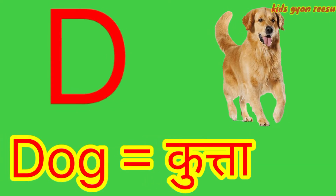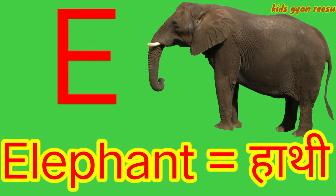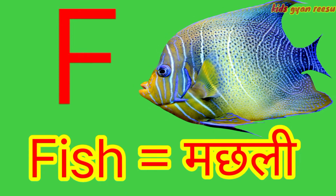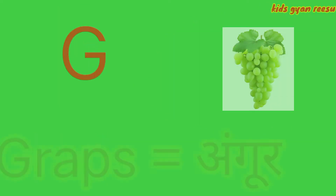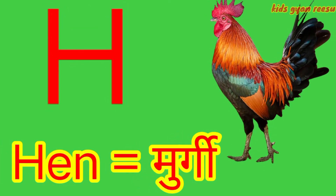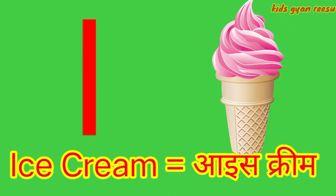E for elephant, F for fish, G for grass, H for hand, I for ice cream.